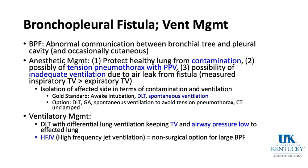The goal is isolation of the affected side to prevent contamination and allow adequate ventilation. The gold standard is awake intubation with a double-lumen tube and spontaneous ventilation. If you positive pressure ventilate a bronchopleural fistula not communicating with the outside air, it will go into the pleura and cause tension pneumothorax. Ventilatory management includes double-lumen tube with differential lung ventilation, keeping tidal volume and airway pressures low to the affected lung, and high-frequency jet ventilation for large fistulas.